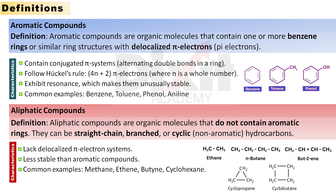Key characteristics of aromatic compounds are: 1. They contain conjugated pi electron systems, that is, presence of alternating double and single bonds in a ring. 2. They follow Huckel's 4n + 2 pi electrons rule, where n is a whole number. 3. They exhibit resonance, which makes them unusually stable.